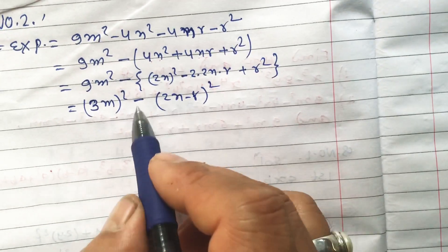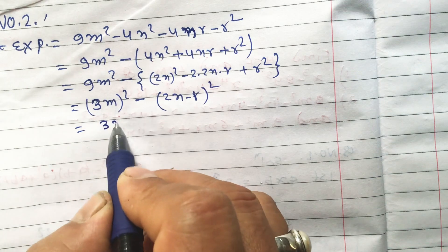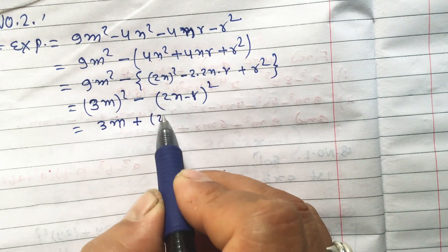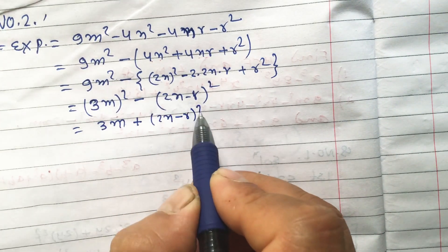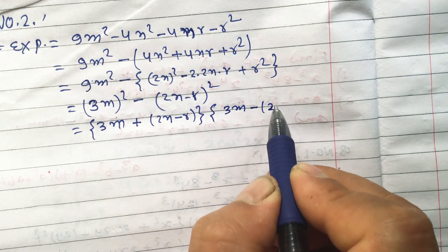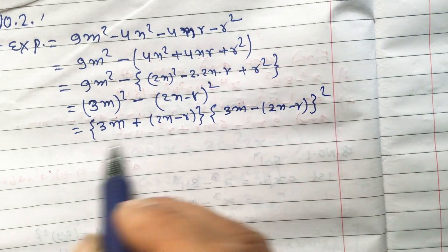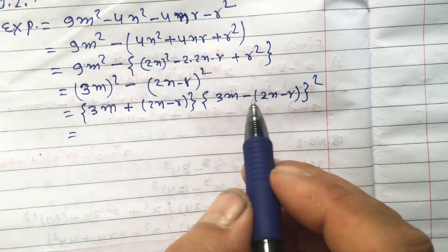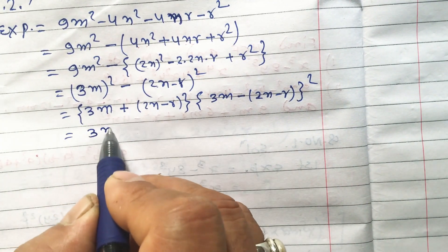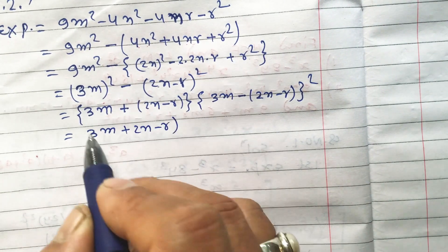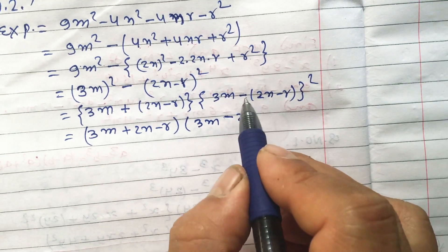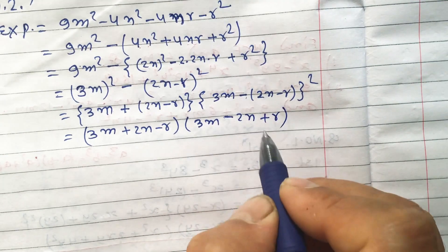Using a square minus b square equals a plus b times a minus b, with a as 3m and b as 2n plus r: one factor is 3m plus 2n minus r, and the other factor — opening the bracket with minus — is 3m minus 2n plus r. These are the two factors for the first expression of question two.